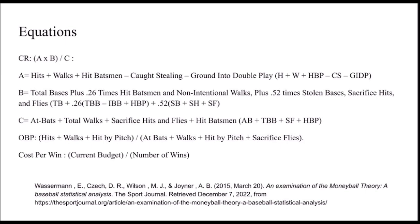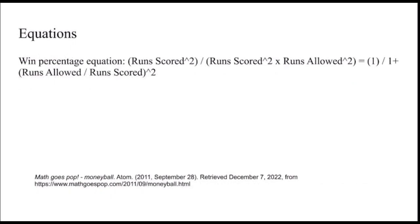Our on-base percentage is pretty simple — it's hits plus walks plus hit by pitch divided by at-bats plus walks plus hit by pitch plus sacrifice flies. Something at the end that I wanted to include was cost per win: it's basically our current budget divided by the number of wins we have, so that determines how much each win costs. Our win percentage predicted equation is run score squared divided by run score squared plus runs allowed squared, which equals 1 divided by 1 plus the quantity runs allowed divided by run score, all squared. This usually gives a percentage equivalent to the predicted win percentage and it's usually 2% to 3% off, but it counts out pretty reliably.